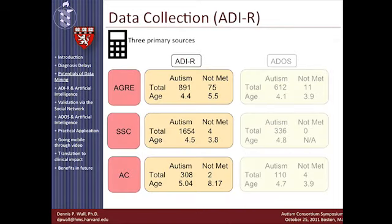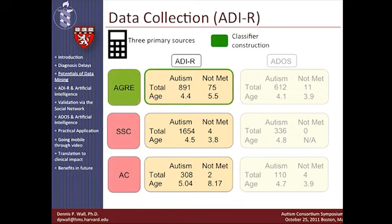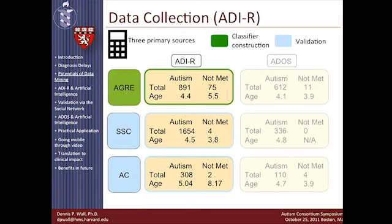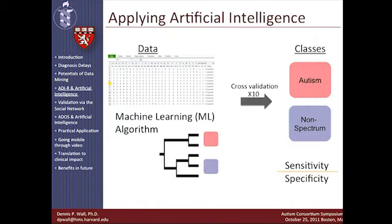The question now is: can we apply machine learning technologies to these data sets that contain upwards of 2,000 individuals already diagnosed with autism? We started by examining the AGRE, Simon Simplex, and Autism Consortium data sets. We used the Autism Genetic Research Exchange as our baseline to construct a classifier — containing 891 individuals diagnosed with autism and 75 individuals who did not meet criteria — and utilized the remaining data sets for validation.